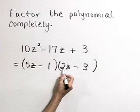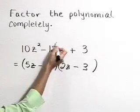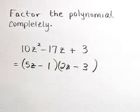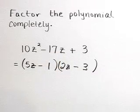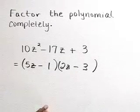Our inner product is negative 2z, the outer product is a negative 15z, and those do sum to our middle term. So the completely factored form of 10z squared minus 17z plus 3 is 5z minus 1 times 2z minus 3.